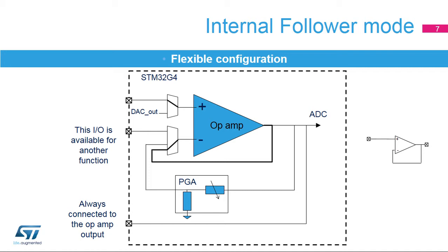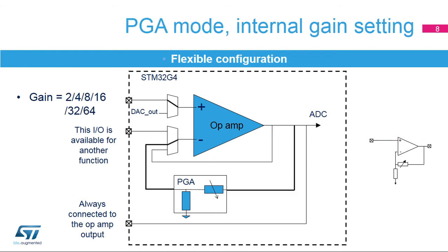The op-amps support non-inverting amplifier mode with 6 fixed gains available. The feedback resistors can be selected to have a gain of 2, 4, 8, 16, 32, or 64 to support the programmable gain amplifier function.